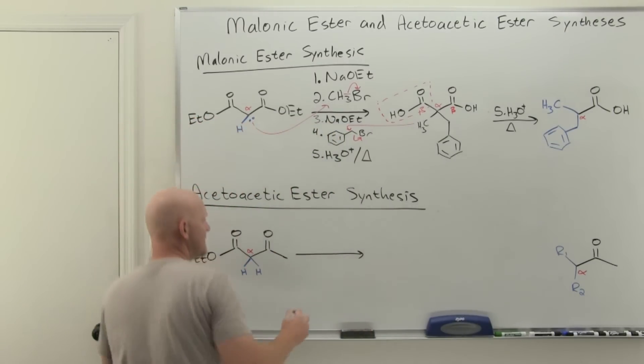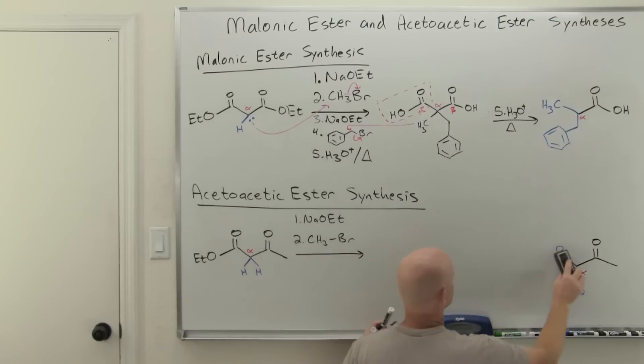You've got an ethyl ester here. And so we're going to use sodium methoxide once again as our strong base. In this case, I'm going to parallel it with what we did here. So I'm going to use methyl bromide in step two. That means that your first alkyl group attached is simply going to be a methyl group.